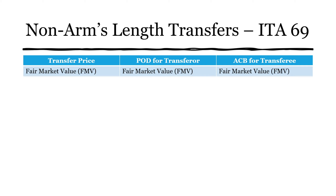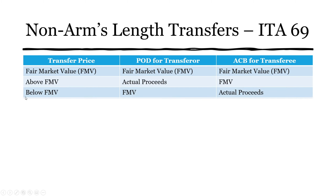What we need to consider are inadequate considerations — any consideration different from fair market value. For example, if the transfer price is above FMV, the proceeds of disposition for the transferor will be the actual proceeds, whereas the adjusted cost base for the transferee is the fair market value. If the transfer price occurs below FMV, the proceeds of disposition for the transferor are the fair market value, and the adjusted cost base for the transferee are the actual proceeds.